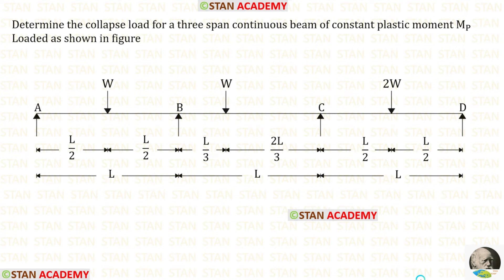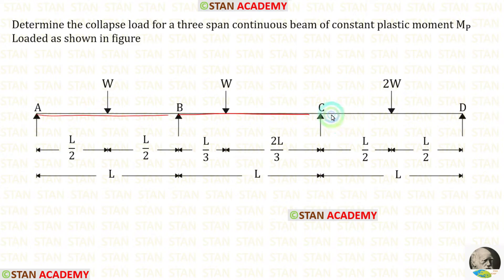Hello everyone, today we are going to do a problem based on plastic analysis. In this continuous beam, we have to find the collapse load. There are three spans: span AB, span BC, and span CD. All three spans have the length L.